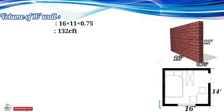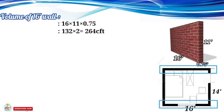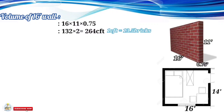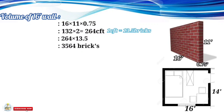We have two 16-foot walls, so we multiply 132 by 2 to get 264 cubic feet. As we know, one cubic foot contains 13.5 bricks, so 264 × 13.5 gives us 3,564 bricks. That quantity of 3,564 bricks is only for the 16-foot walls.